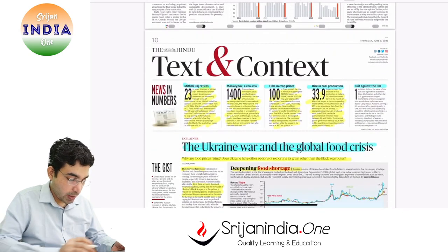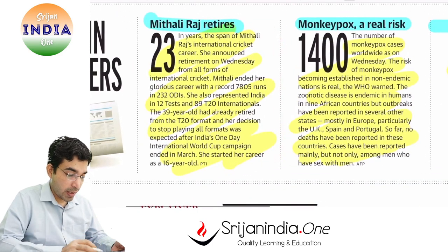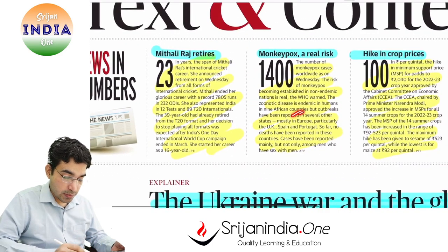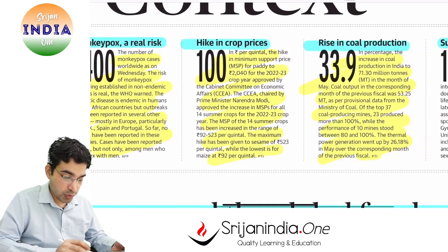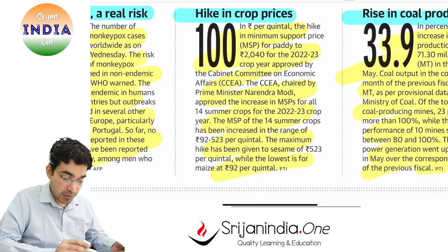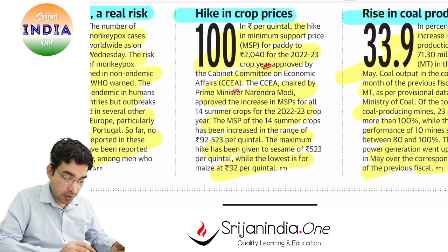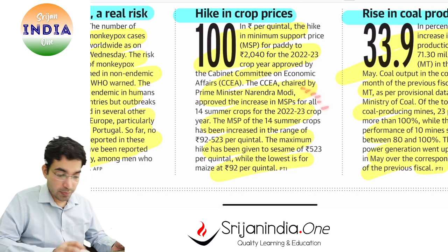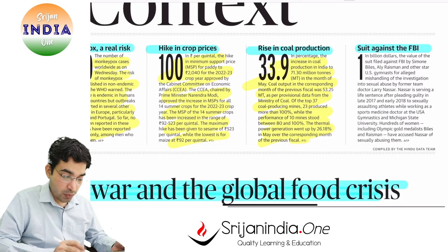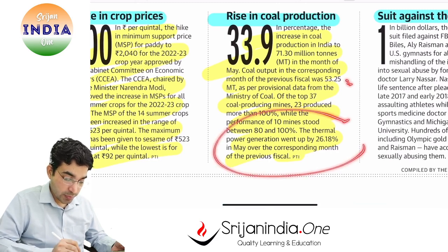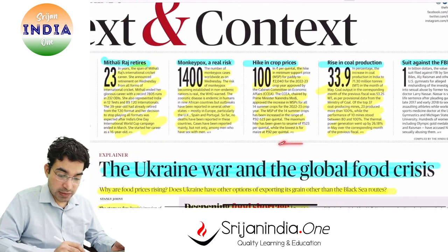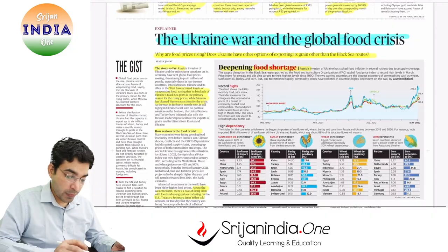Root walks into the 10,000 club, and Mithali Raj retires — an excellent sports person. Monkeypox is a real risk — the WHO has given a warning about monkeypox spread. Crop prices have hiked — MSP (Minimum Support Price) — approval is given by CCEA (Cabinet Committee on Economic Affairs), whose chairman is the Prime Minister. MSP hike has been approved. Coal production increased to 71.3 million tonnes; thermal power generation also increased compared to the corresponding month of the previous fiscal year.